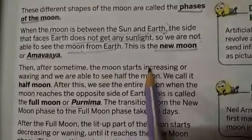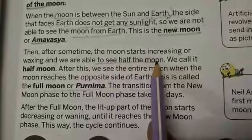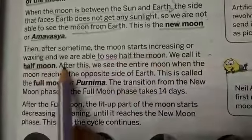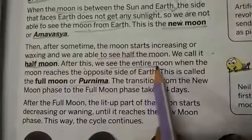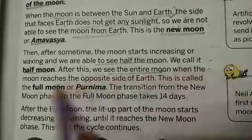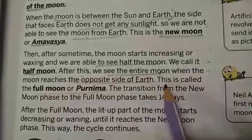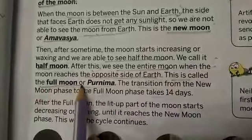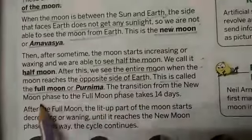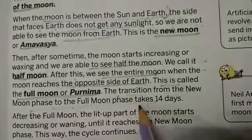Then after some time, the moon starts increasing or waxing and we are able to see the half moon. After this, we see the entire moon — the full moon. When the moon reaches the opposite side of the earth, this is called the full moon, or Purnima. The transition between the new moon phase and the full moon phase takes 14 days.